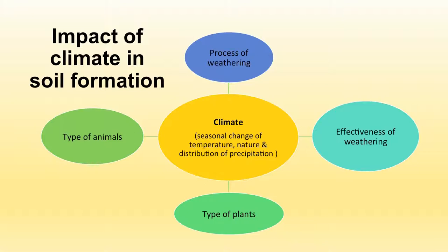Climate affects soil formation through its seasonal change of temperature, and the nature and distribution of precipitation. This results in and affects the process of weathering, the effectiveness of weathering, the types of plants, and the types of animals found in that area. All these together have an effect on the formation of soil.